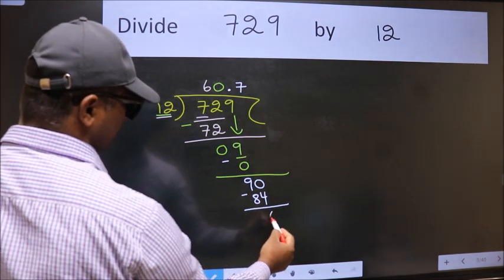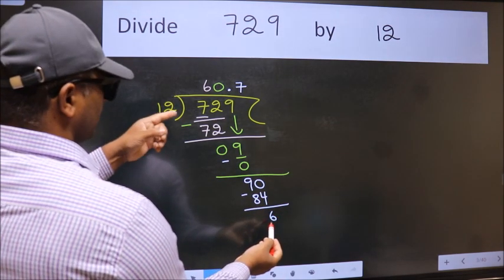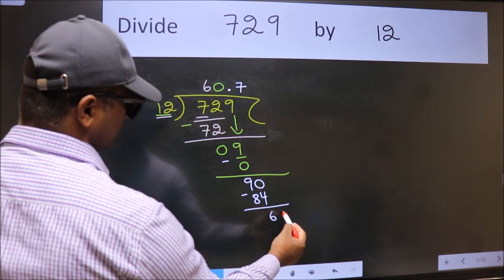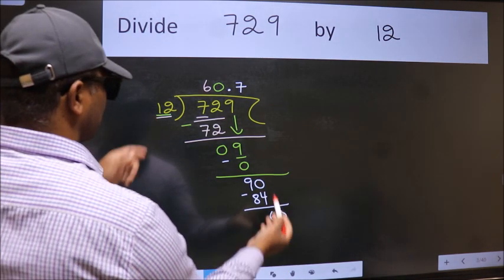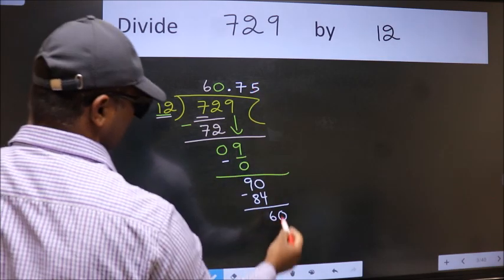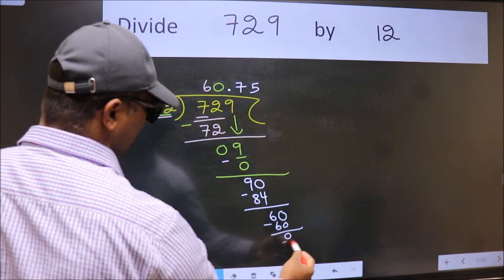Now we subtract. We get 6. 6 is smaller than 12. Now we subtract. We get 0.